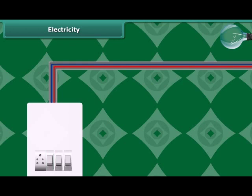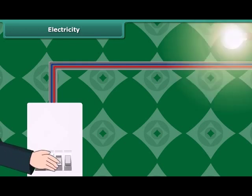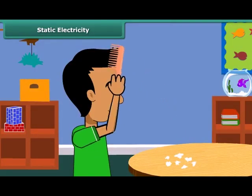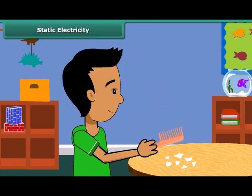When we comb our hair with a plastic comb and take it near small pieces of paper, the paper pieces are attracted toward the comb. We then say that the comb is charged with electricity.